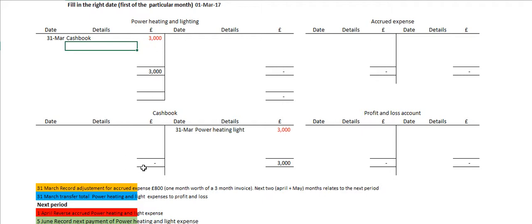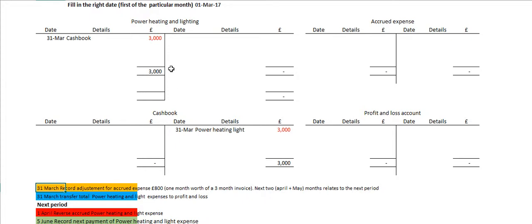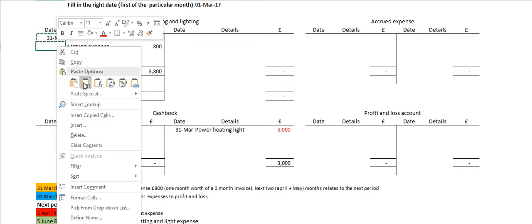We are doing an adjustment because there is one month left that we haven't included in terms of power, heating and lighting within this period. So we need to include one extra month. That works out to be £800, because we think the next invoice we're going to get is for £2,400. So we are going to record this accrual expense for £800. With accruals, whether it's income or expenses, it always makes the account bigger. So £800, with the name of the opposite account being accrued expense, and this happens on the 31st of March.